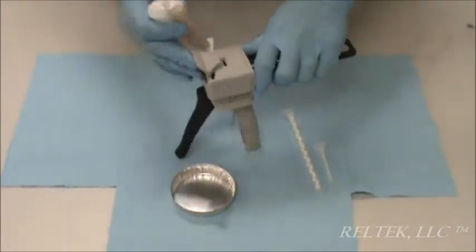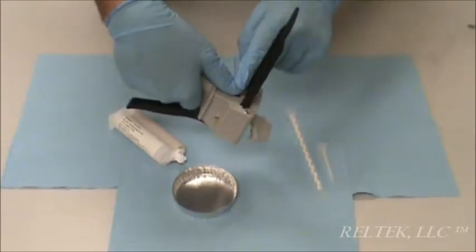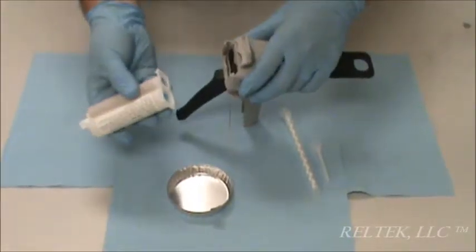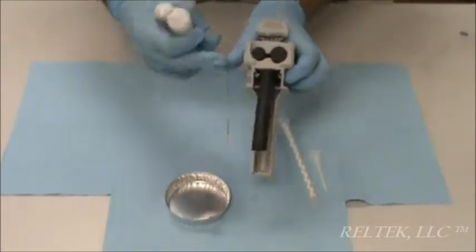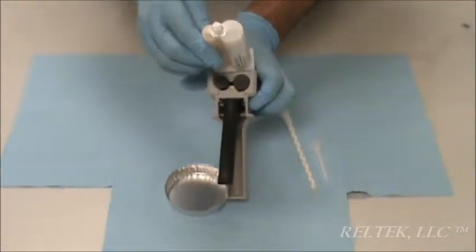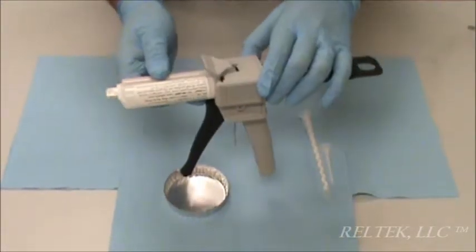So, first what you want to do is make sure the plunger is all the way back by pushing up on the button and pulling all the way back. Insert the cartridge into the gun the appropriate way. There's one side that's bigger than the other and you would insert the cartridge in the exact same way. Just slips right in. Then you can put the cover over if you'd like.